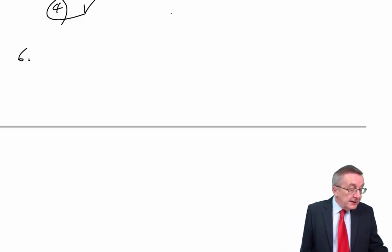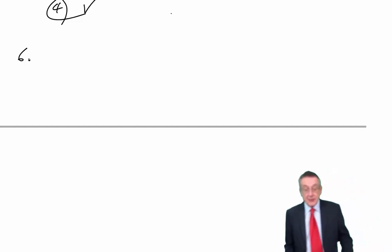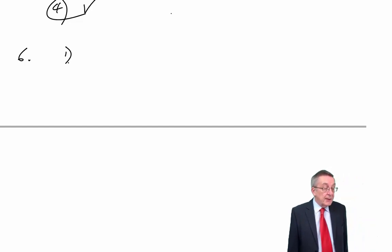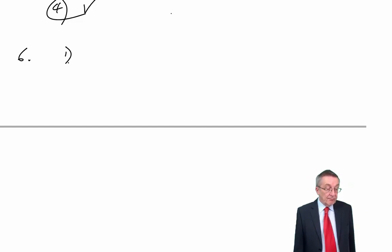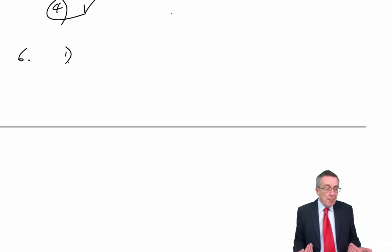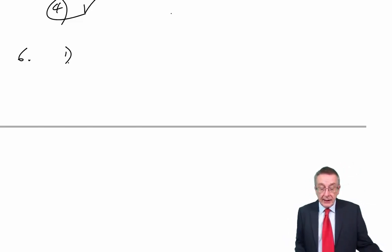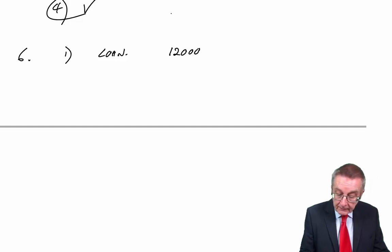Let's go back and read it. At December X5, the following require inclusion in the financial statements — there are three things. First, number one: on the 1st of January, the company made a loan of £12,000 to an employee, repayable on 1st of January X6. We're doing the accounts at December X5, and so we are owed that £12,000. It's a current asset — it's not paid to us till tomorrow.